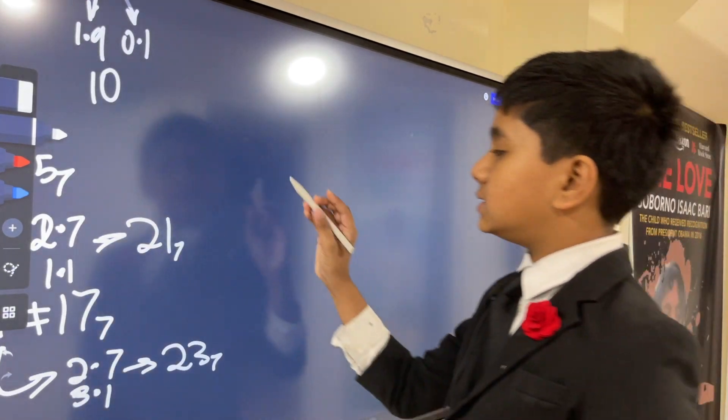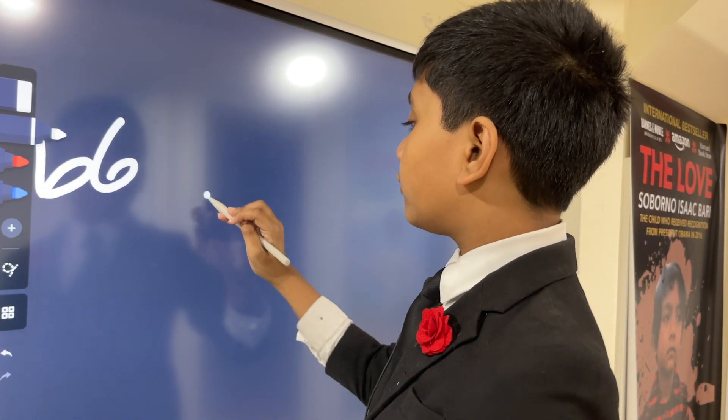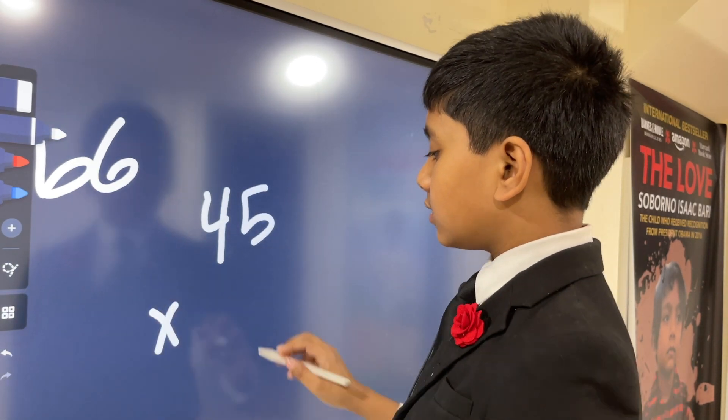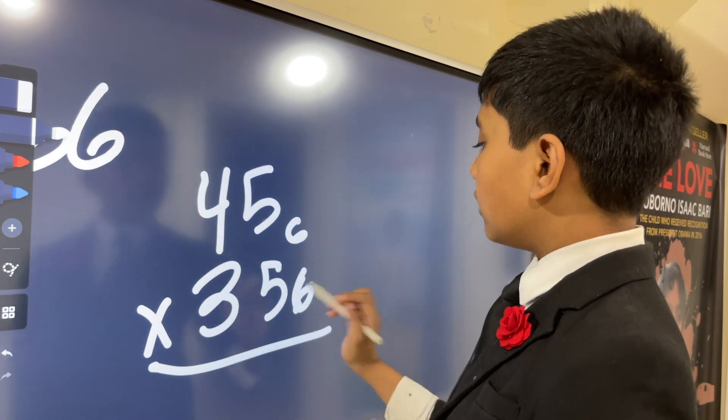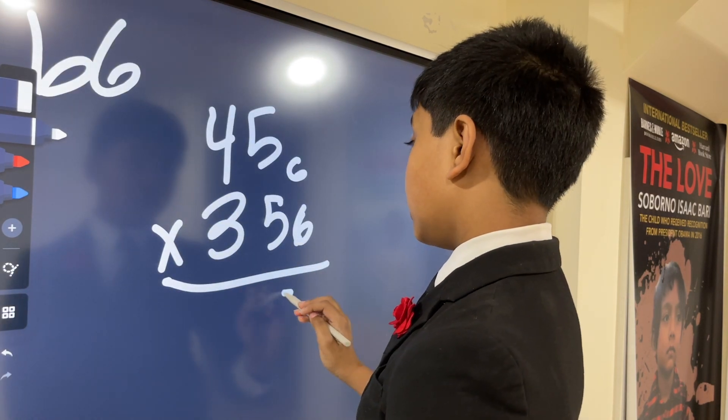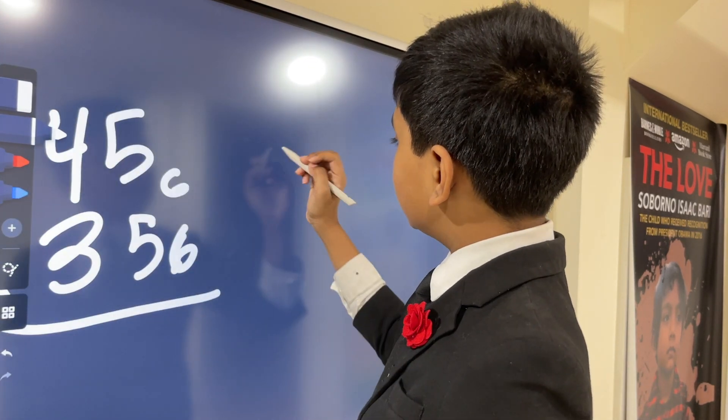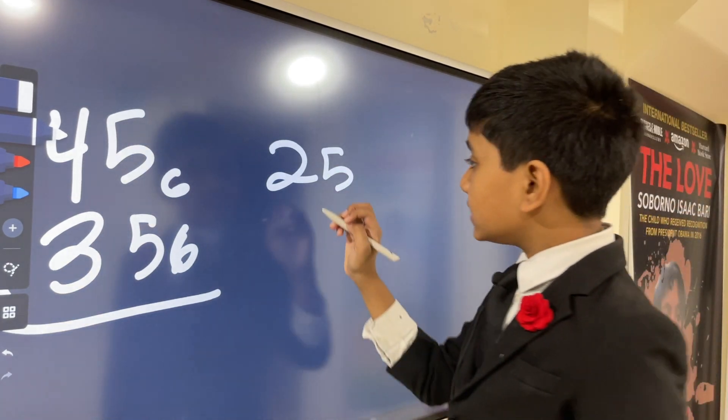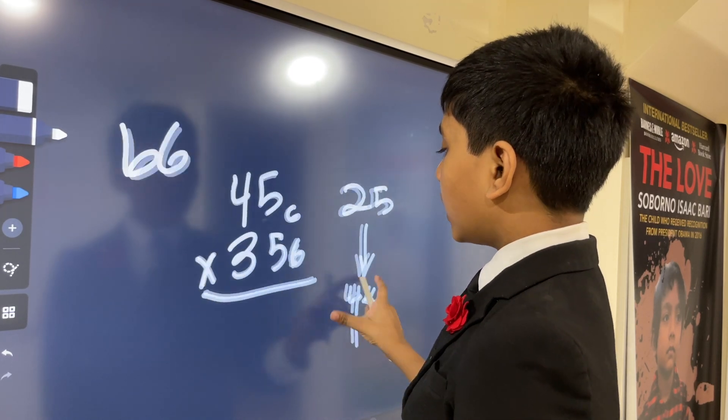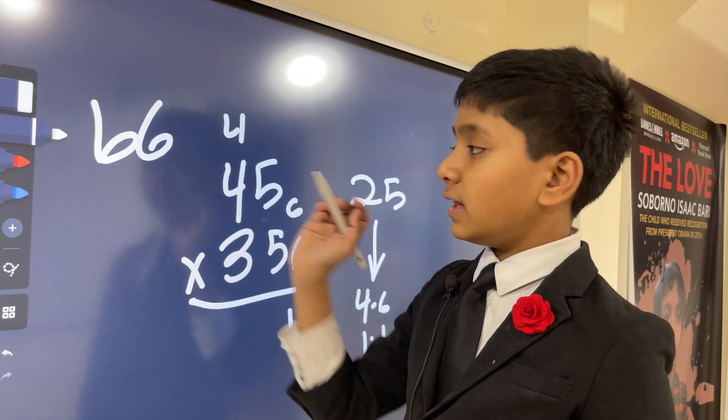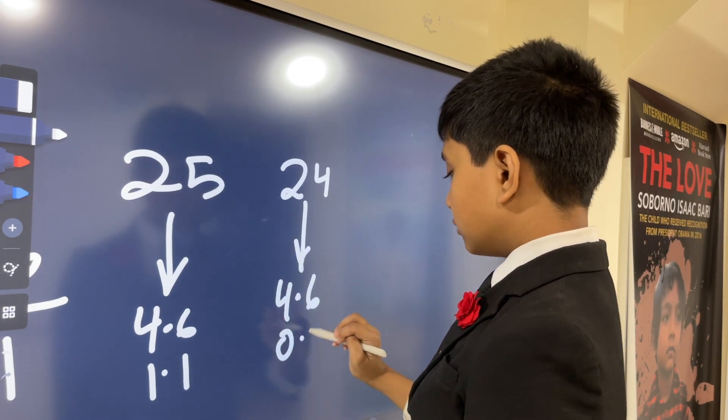For base 6, let's do a similar challenge. Let's take 45 and 35 in base 6. 5 times 5 is 25. Let's convert it to base 6. That's 4 times 6 and 1 times 1, so it's 41. 5 times 4 is 20, which is 4 times 6 and 0 times 1, so it's 40.